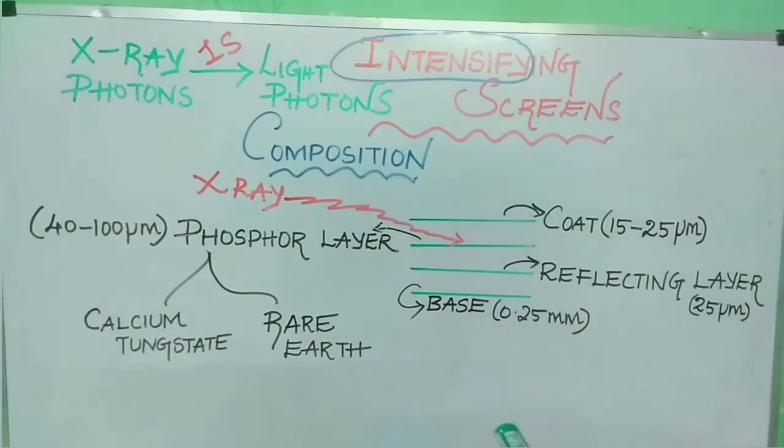Types of phosphors used in dental screens are calcium tungstate and rare earth phosphors. Calcium tungstate fluoresces or emits light in the blue portion of the spectrum. Whereas rare earth phosphors fluoresce in the green portion of the spectrum. Rare earth phosphors include gadolinium oxysulfide thallium activated, lanthanum oxybromide, and these rare earth phosphors are four times more efficient compared to calcium tungstate.